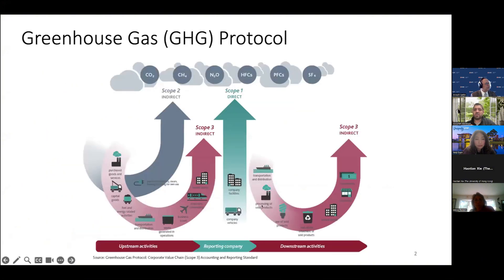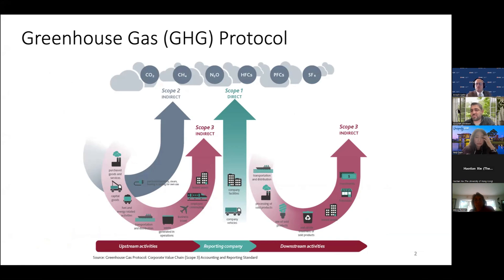As Professor Sarkis mentioned about Scope 3, here is a graph about the scope tree based on the greenhouse gas protocol. As you can see, we have upstream activities, downstream activities, and reporting companies. Scope 3 includes all indirect emissions that occur in the value chain, both upstream and downstream.